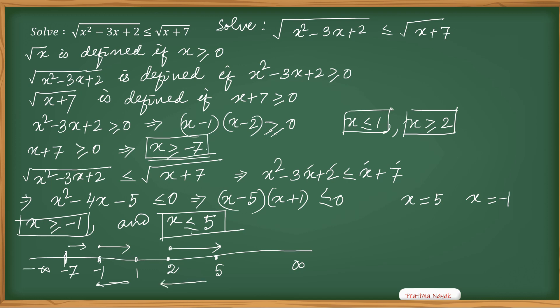So here clearly we are getting one interval from 2 to 5. Another is from -1 to 1. So what is the solution? Solution is x belongs to [-1, 1] union [2, 5].